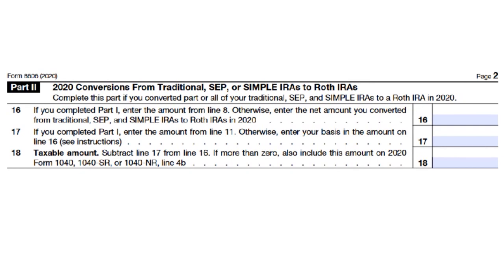Moving on to Line 18, the taxable amount: if your entry on Line 18 is zero or less, do not include the result on your Form 1040, 1040-SR, or 1040-NR, Line 4B. You want to include the full amount of the distribution on Form 1040, 1040-SR, or 1040-NR, Line 4A.